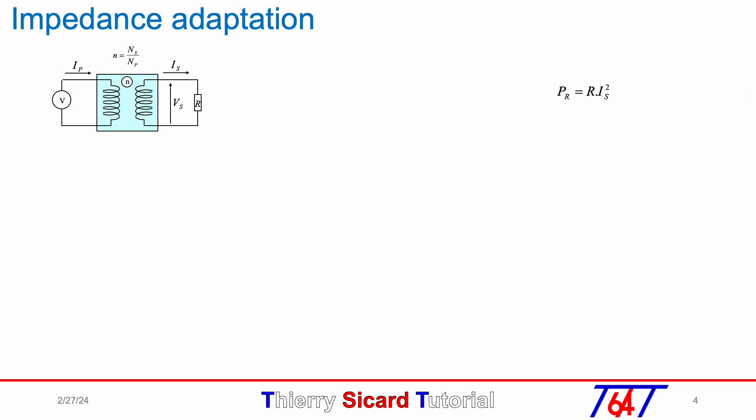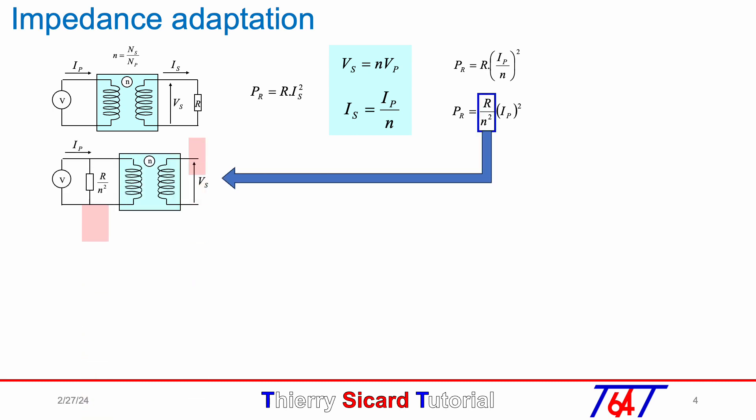The power on secondary side is R times I_S squared. As I_S equals I_P over n, we can write the power resistance function of the primary current by replacing I_S by I_P over n. So we will get the same power if we connect the resistance R over n squared directly on the primary side. Both red rectangles show that both resistances have the same power. In other words, resistance R on the secondary side is viewed as R over n squared from the primary side.